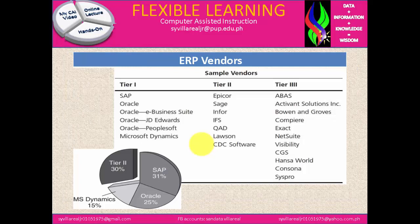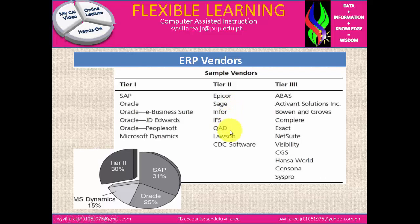Here we have the ERP vendors organized into tiers. In the first tier: SAP, Oracle eBusiness Suite, JD Edwards, PeopleSoft, and Microsoft Dynamics. In the second tier: Epicor, Sage, Infor, IFS, CAD, Lawson, and CDC Software. In the third tier: ABAS, Activant Solution, Bowen and Groves, Compere, Exact, NetSuite, Visibility, CGS, Hansa World, Consona, and SysPro. These are the software companies that serve as ERP vendors.